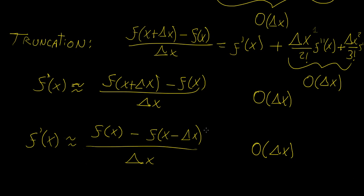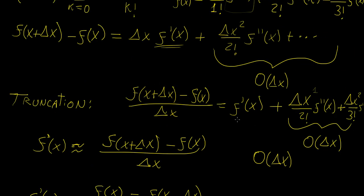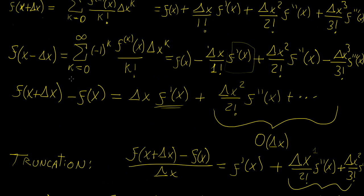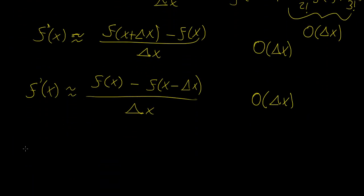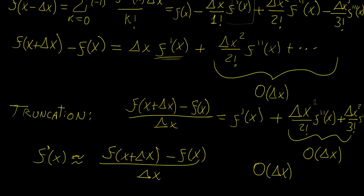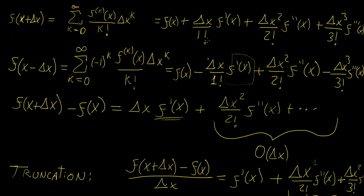To increase accuracy, we can derive a central difference scheme by combining both Taylor series. If we try adding f(x + Δx) and f(x - Δx) together, the f(x) terms combine to give 2f(x), but the first derivative terms cancel out — so we can no longer solve for f prime of x that way.